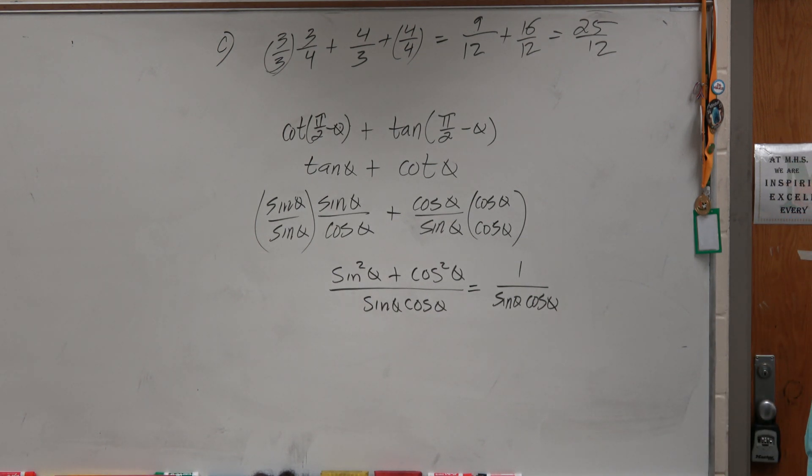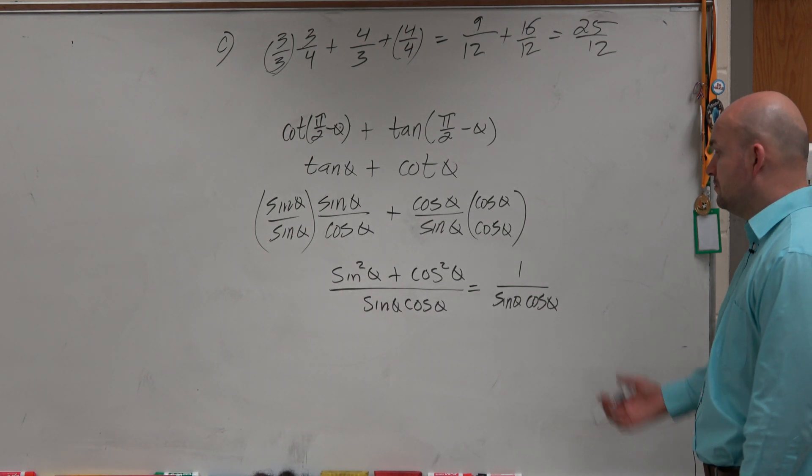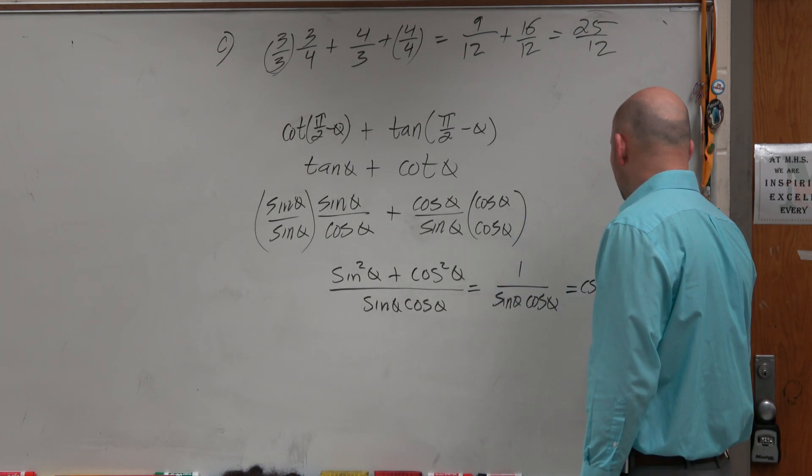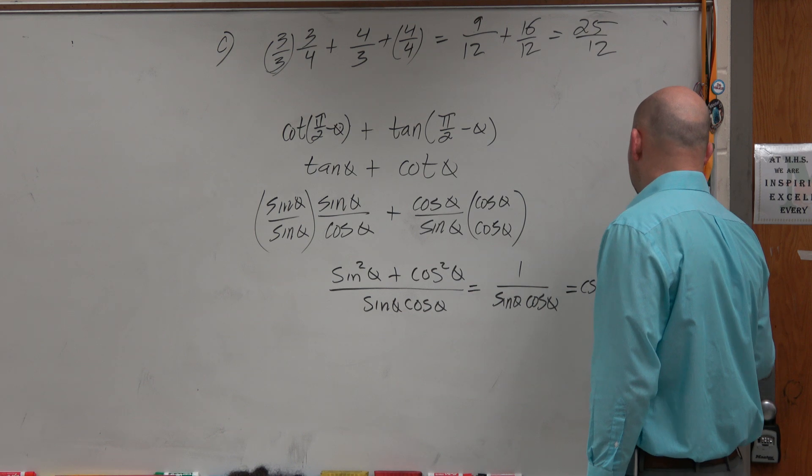And can I now simplify that even further? 1 over sine is? Cosecant. 1 over cosine is? Secant.